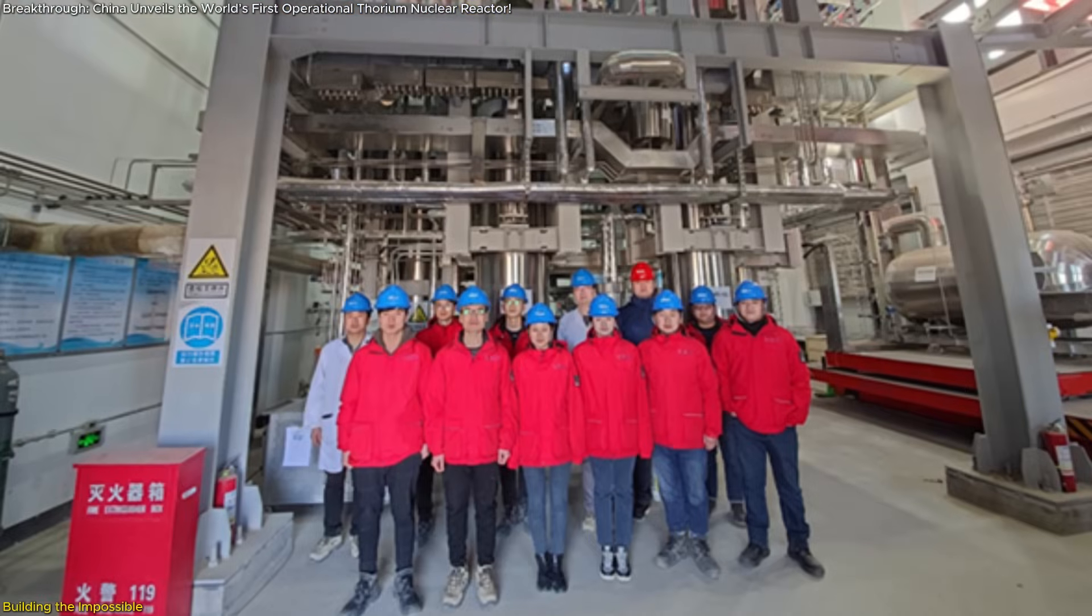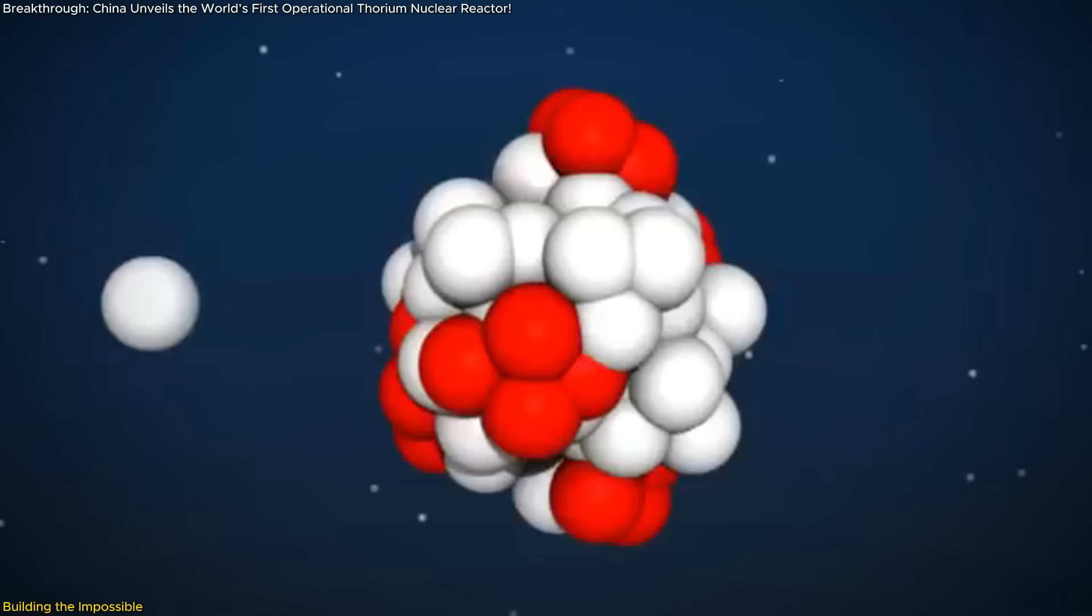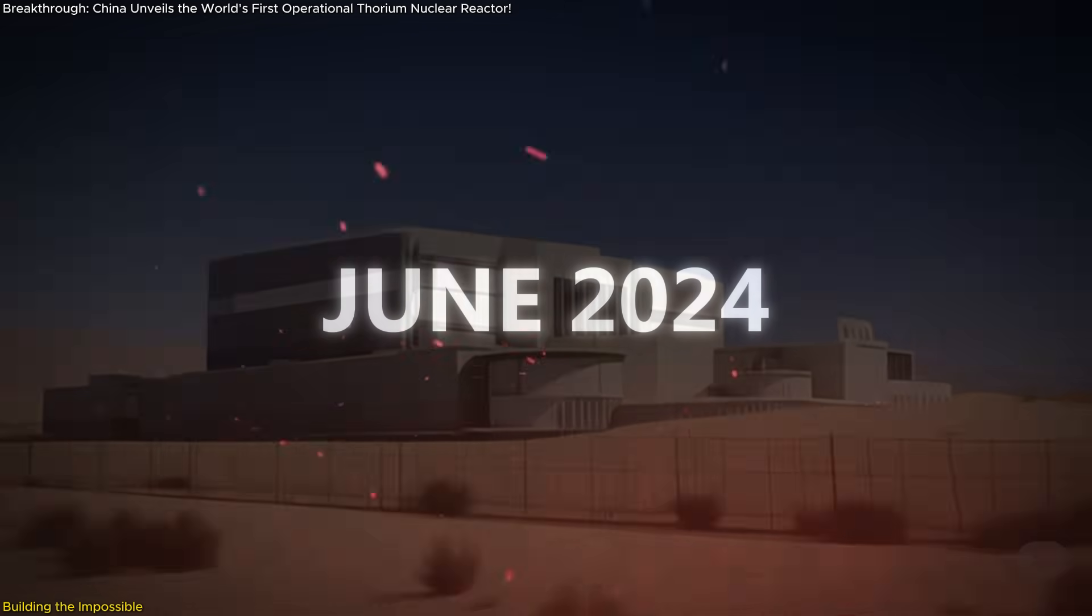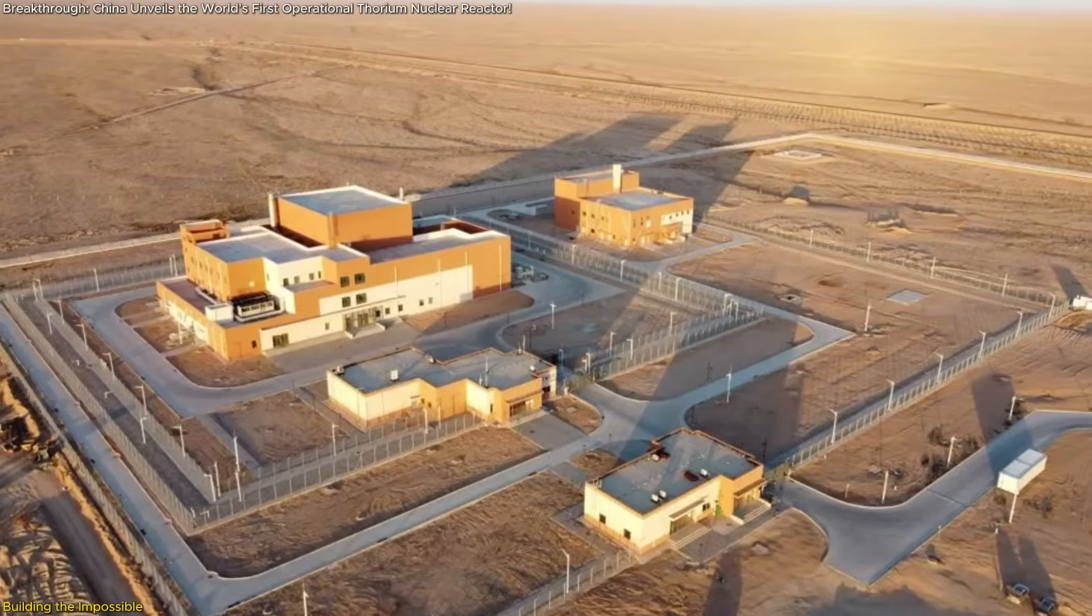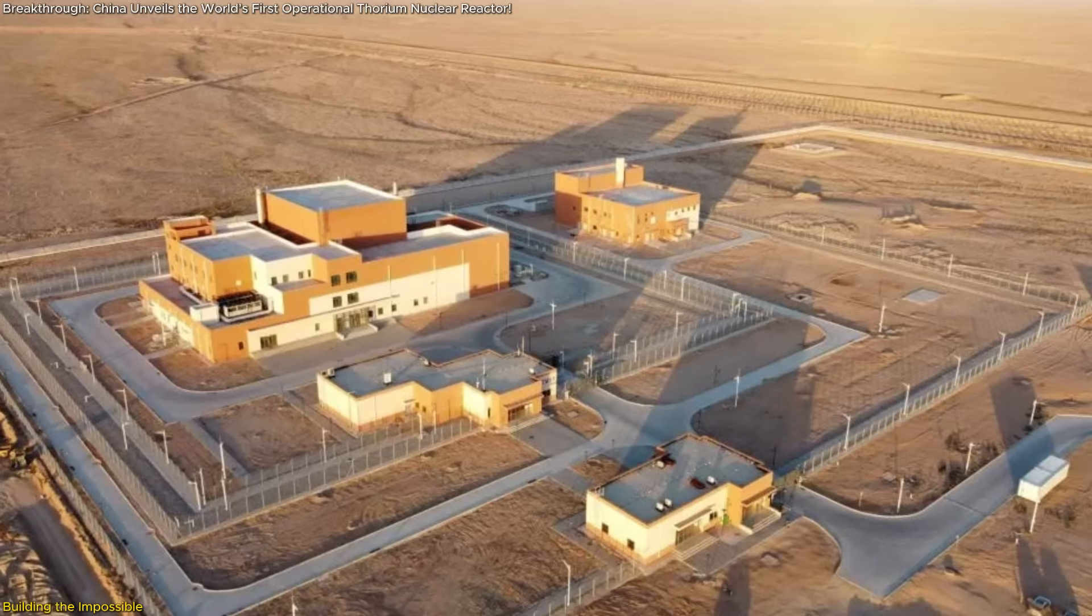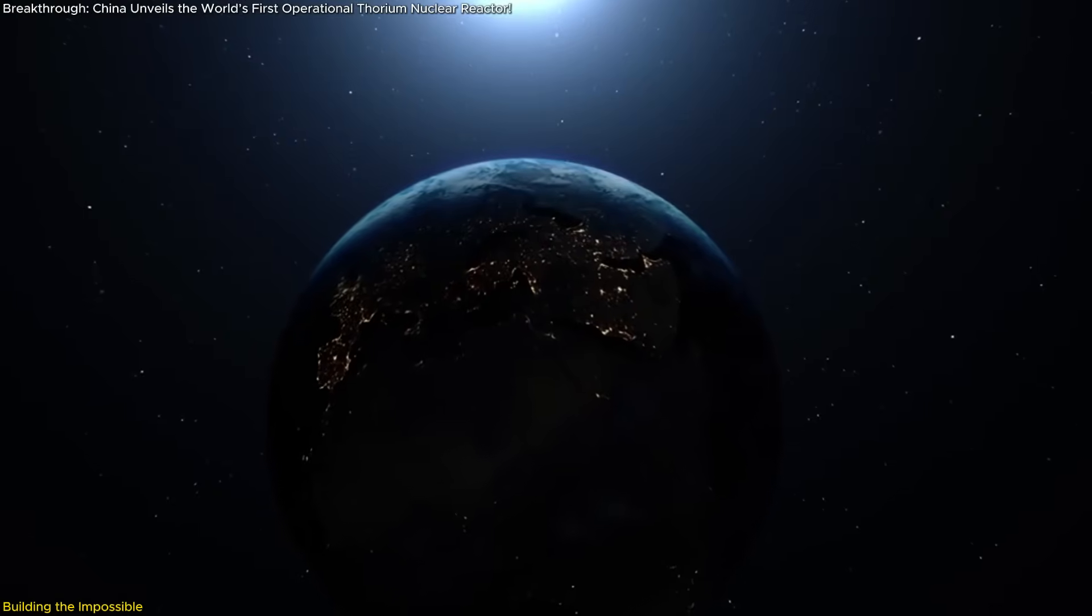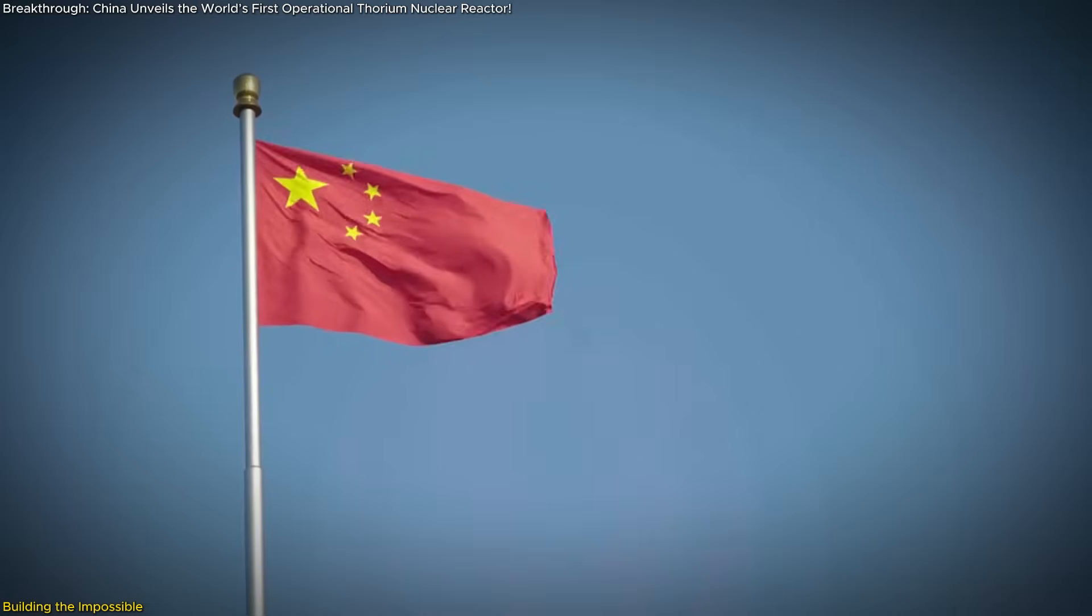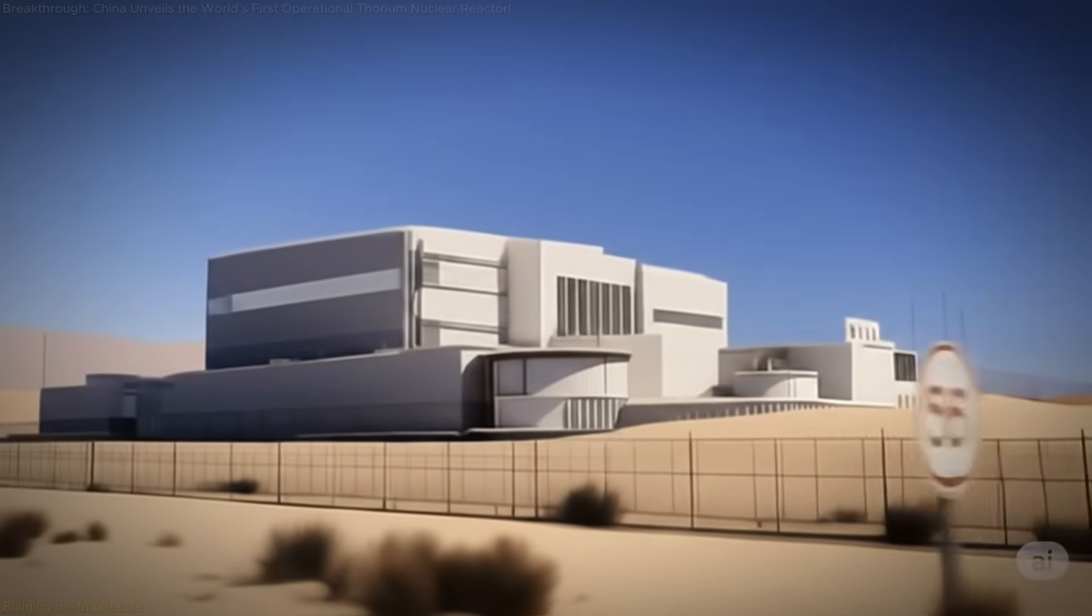The team's success was incremental. In October 2023, the reactor achieved criticality, meaning it could sustain a nuclear chain reaction. By June 2024, it reached full power operation. Then in October 2024, they accomplished the fuel reload milestone, earning the title of the first operational thorium molten salt reactor in the world. Team members reportedly worked over 300 days a year, many even sleeping on site. Su described the experience as a national cause rather than a job. This was science in service of history.